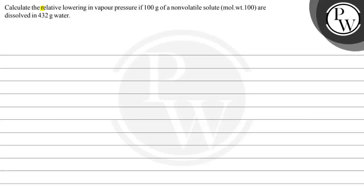Hello, let's read this question. Calculate the relative lowering in vapor pressure if 100 grams of a non-volatile solute with molar weight 100 are dissolved in 432 grams of water. A very simple question. What is the key concept?